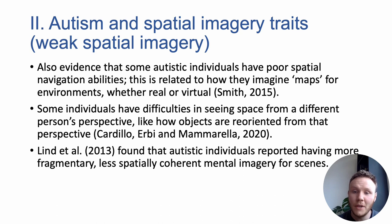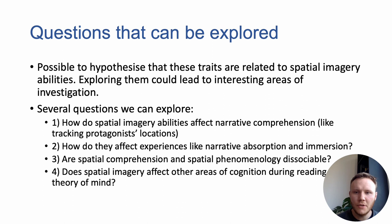This can entail having difficulties in seeing how objects are reoriented from another perspective. It's also been reported that mental imagery for imaginary scenes, in terms of spatial coherence, could be much more fragmentary and less coherent. With these traits in mind, it's possible to hypothesise that some autistic readers may present differences in spatial imagery abilities, and exploring these traits could potentially lead to interesting areas of investigation.